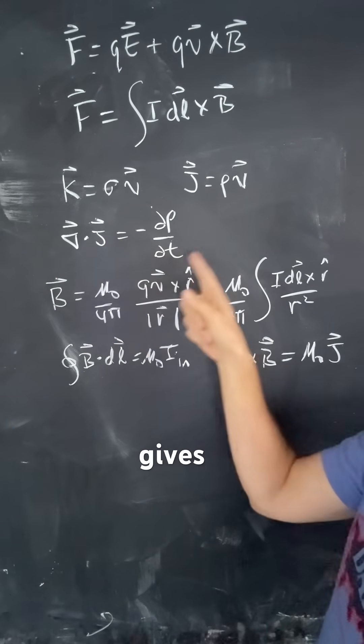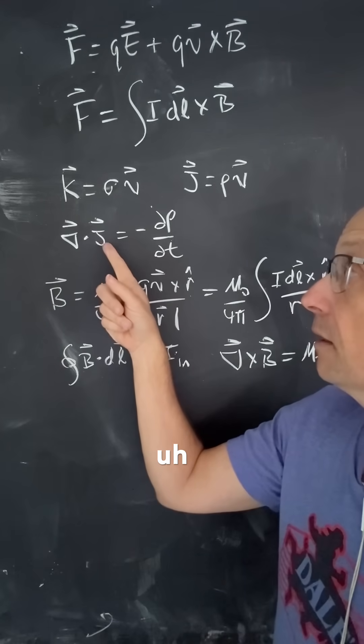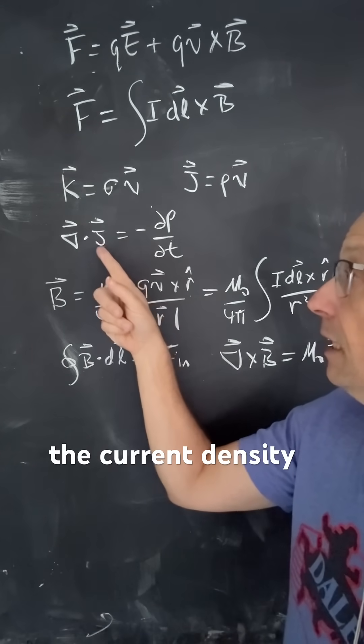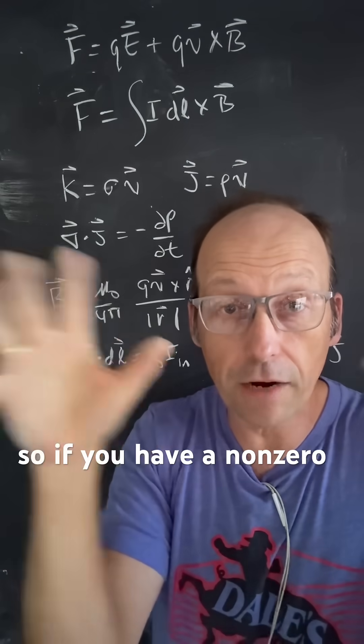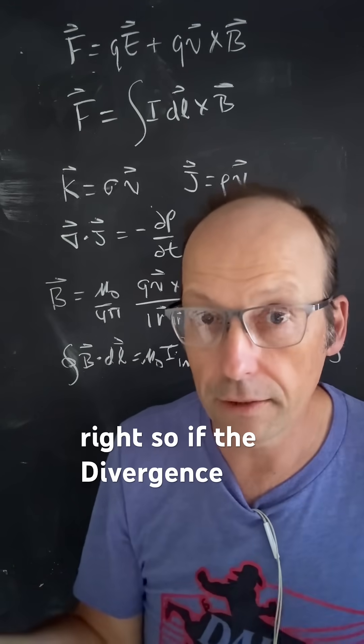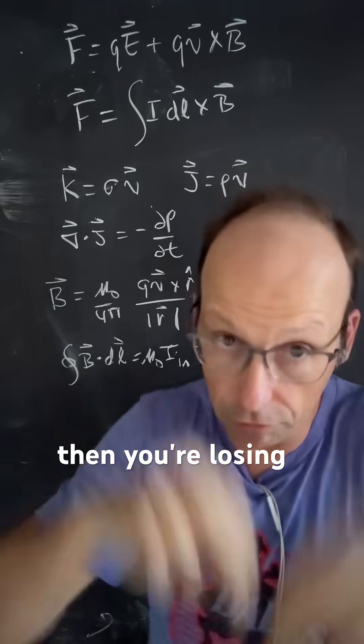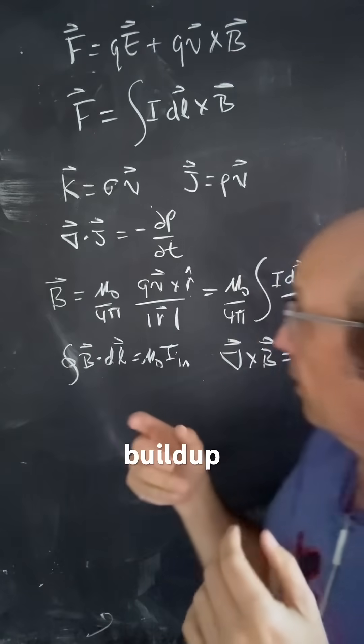If this gives rise to the following, the divergence of the current density, this just says that charge is conserved. So if you have a non-zero divergence, then you have to have a buildup of charge in one way or the other. So if the divergence is positive, then you're losing charge. If you have a constant, if the divergence is zero, then there's no charge buildup.